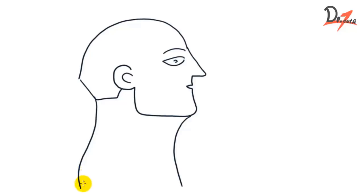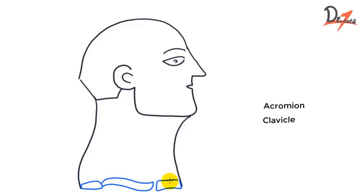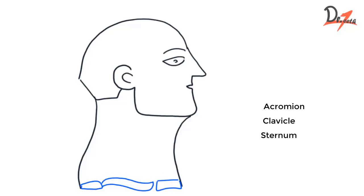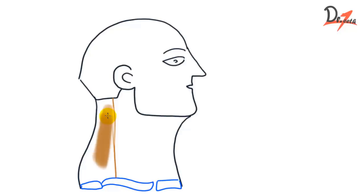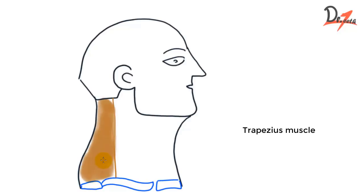We have some structures here. This is the acromion, this right here is the clavicle, and then here we have the sternum. One muscle of importance here is the trapezius muscle — we have this muscle at the back of our neck, and that is the trapezius muscle.